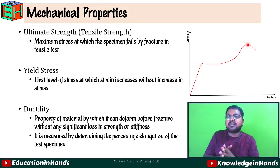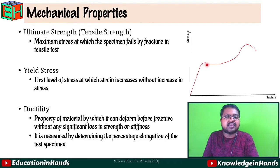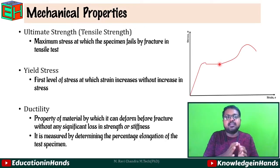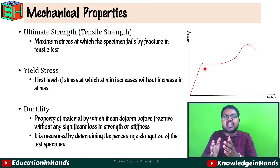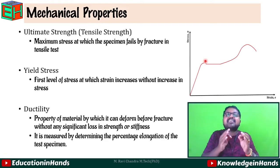Next, yield stress or yield strength. Yield stress is the first level of stress at which strain increases without any increase in stress. From that point, strain continuously increases without any increase in stress, meaning the body is perfectly in a plastic state. The starting point at which the body loses its elastic nature and behaves as a plastic member is called the yield stress or yield strength point.